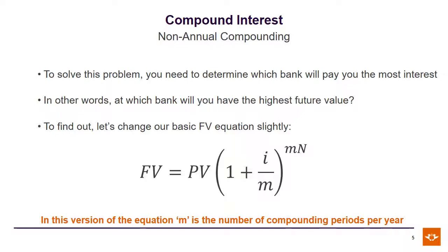And we have to raise it to the power m times n, where n is the total number of years or total period you're interested in investing the money for. If you're interested in investing it for two years and interest is paid half yearly, you will have a total of four periods, two times two.